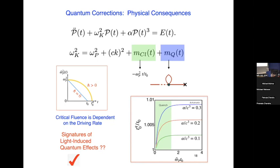The critical fluence depending on driving rate is a first signature of light-induced quantum effects. We're in discussion with experimentalists to see what else can be measured — polarization-polarization correlations, we can look at, and there's some discussion about noise. The next step is to talk to the experimentalists and see what can actually be measured.